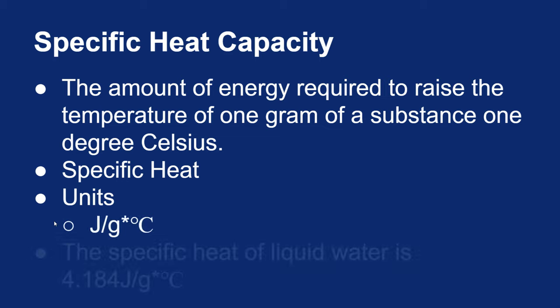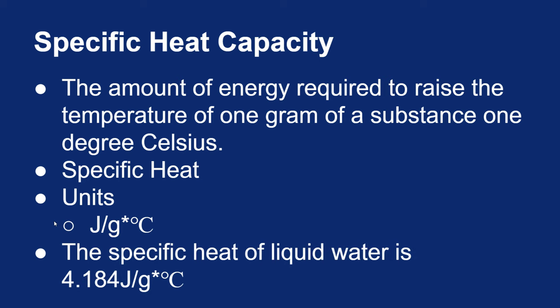So we know for water, the specific heat of liquid water is 4.184 joules per gram degree Celsius. We know this because the definition of a small calorie was the amount of energy to raise one gram of liquid water one degree Celsius. The definition of a small calorie is the specific heat capacity of liquid water. And we know that there are 4.184 joules of energy in every one small calorie. So if the specific heat of liquid water is one small calorie, then the specific heat of water is 4.184 joules per gram per degree Celsius.